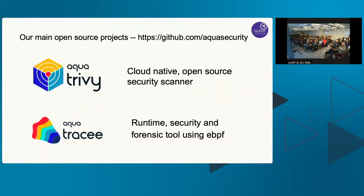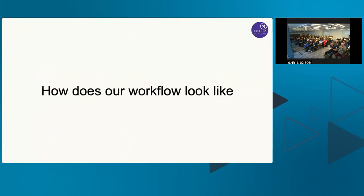At Aqua Security — and this is the only sales pitch I have, I promise — we have two main open source projects on our GitHub. The first is Trivy, which does file system scanning, container image scanning, and scanning cloud resources for vulnerability security issues; it can also produce SBOMs. Then we have Tracee, a runtime security and forensic tool using eBPF. Both are completely open source, independent of the enterprise product.